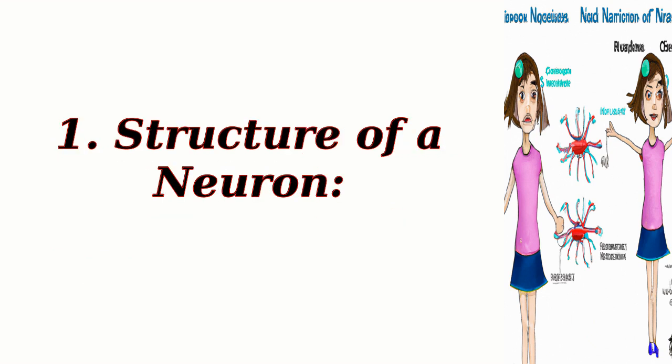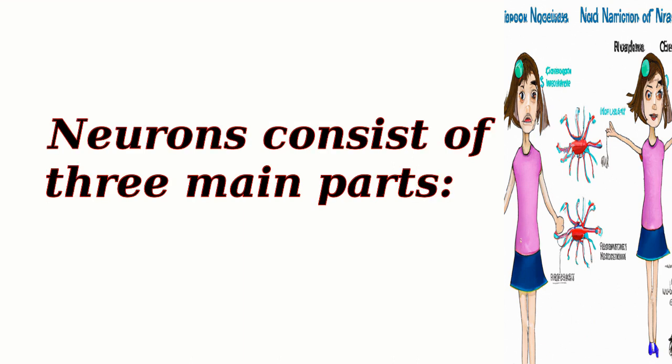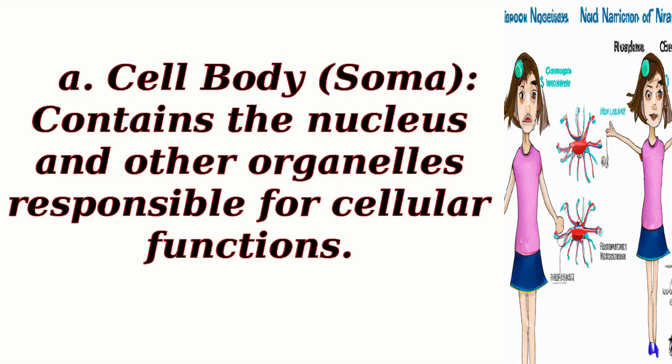Structure of a neuron: Neurons consist of three main parts. The cell body, or soma, contains the nucleus and other organelles responsible for cellular functions.